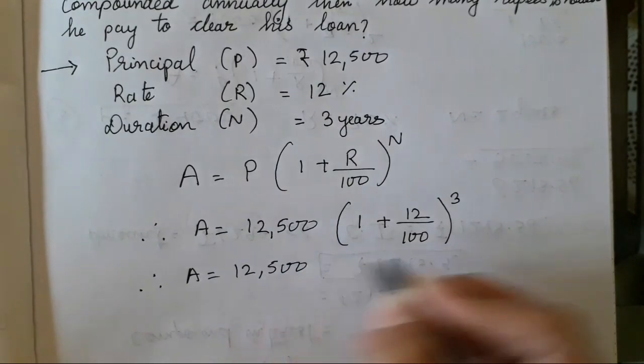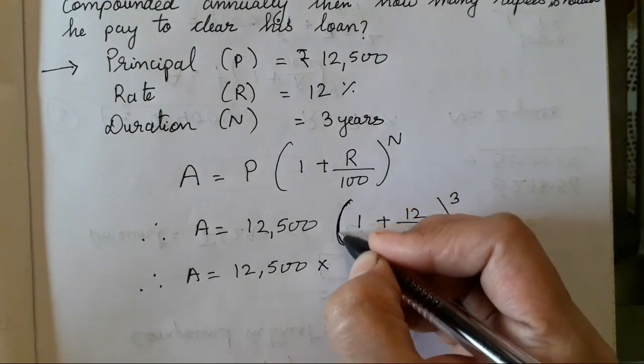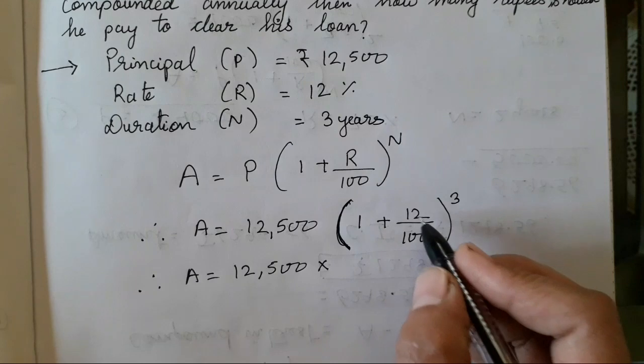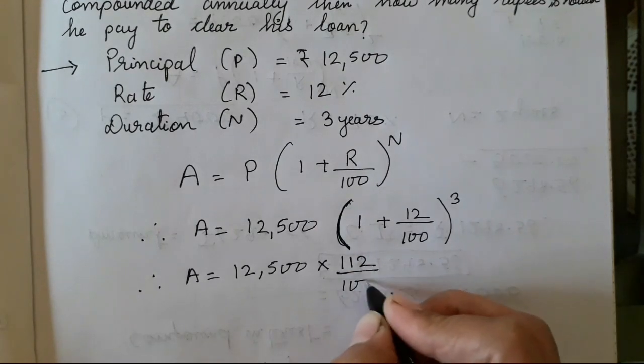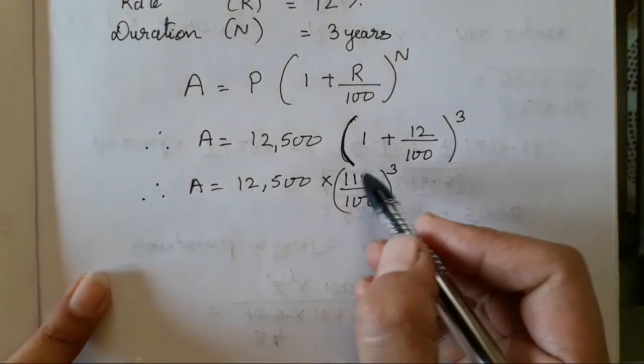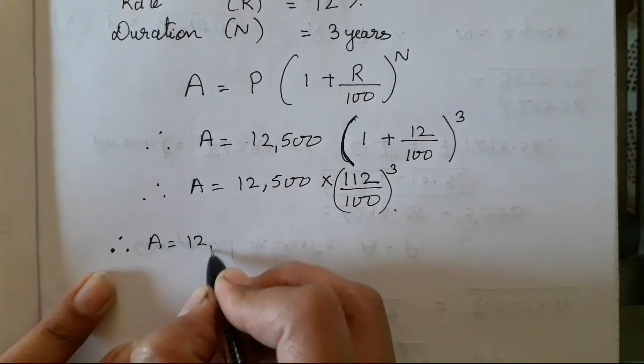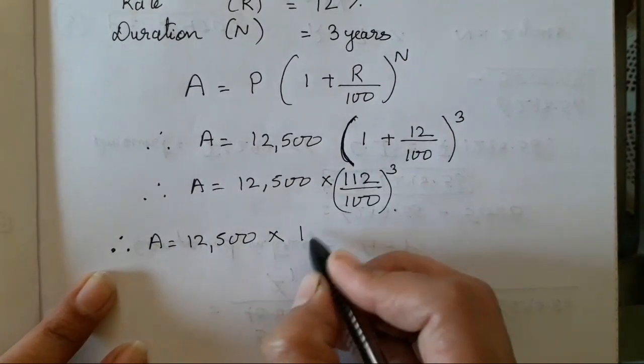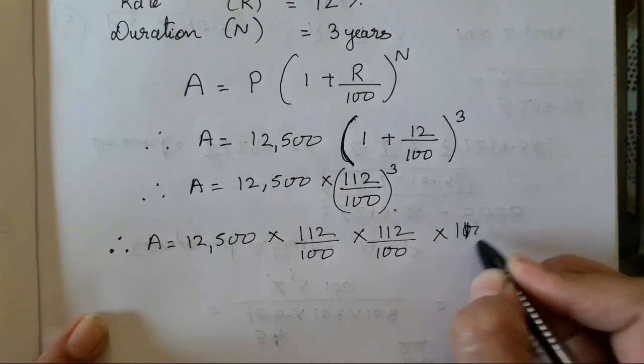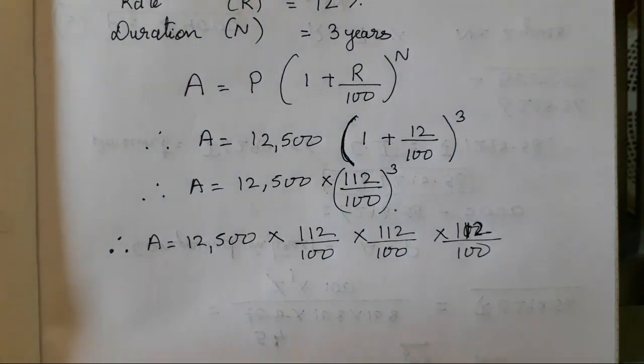Now, A equals, again write it down, first we will solve the bracket. Multiplication sign will come because before the bracket there is nothing, so we have to add a multiplication sign. So 100 into 100, 100 plus 12 is going to be 112 upon 100 raised to 3. After this, you don't have to remove the cube of these numbers children, it will be a very big number to solve. What trick we can use is A = 12,500 into this fraction, we have to write it 3 times. It becomes very easy for us to solve if we do it in this form.